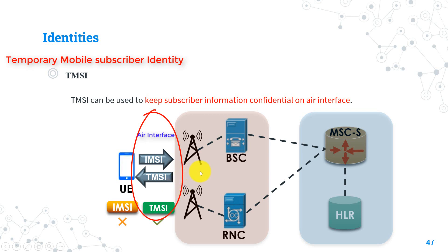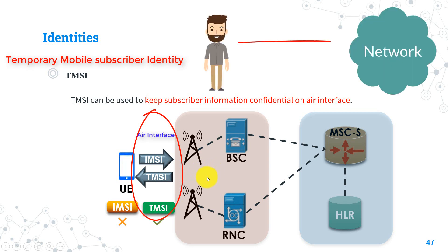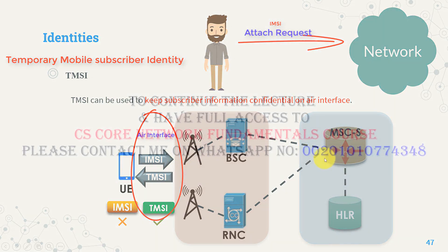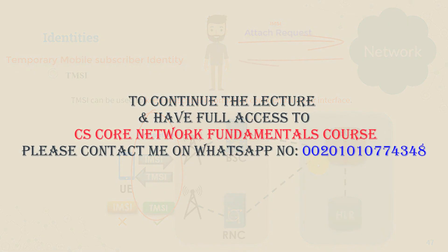Let's see in a high-level view how this happens. First, the user attaches to the network using the IMSI identifier. Then, after the registration is complete, the MSC allocates a TMSI and sends it to the mobile user, ordering them to use it in future transactions.